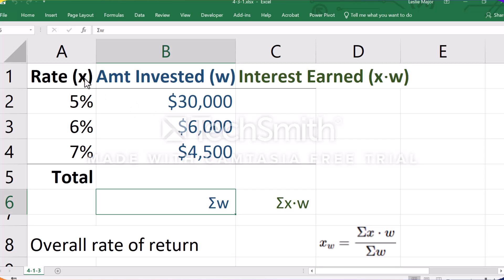Let's say we have an example where we have rates of return earned on these amounts of money, and we want to know the overall rate of return from these. So we earn 5% on the $30,000.